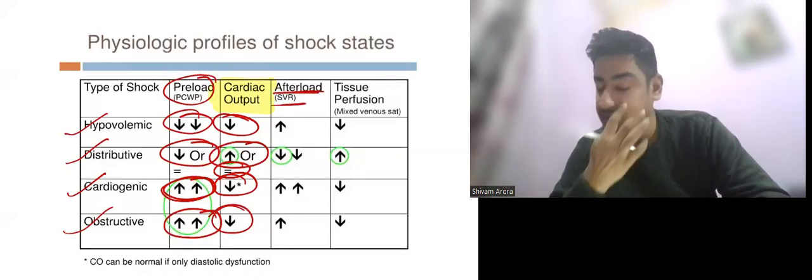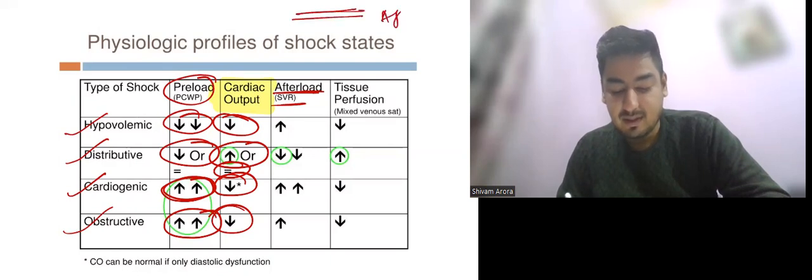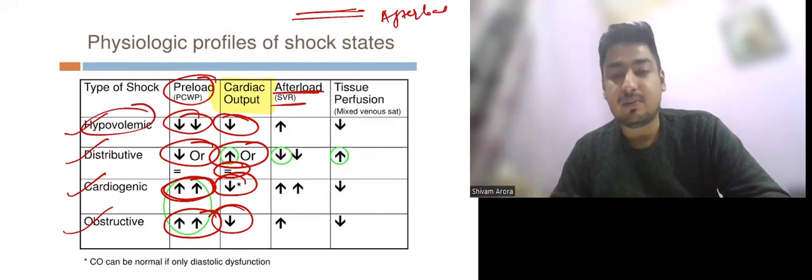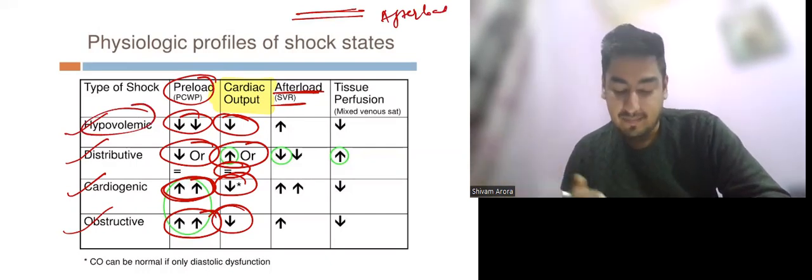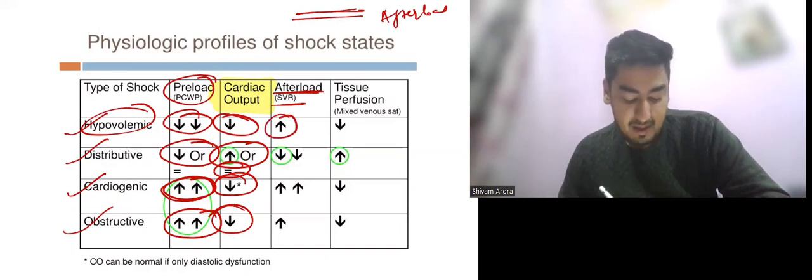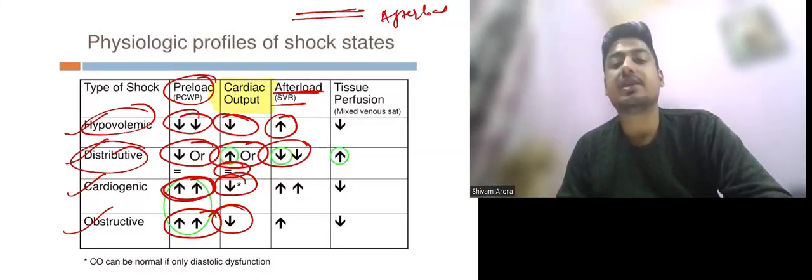Now let us discuss afterload, which is governed by systemic vascular resistance. The more vasoconstriction in the periphery, the more afterload increases. So definitely in hypovolemic shock, the body will have increased afterload.